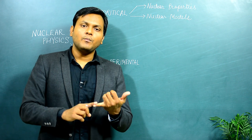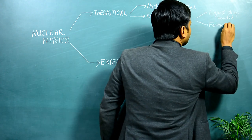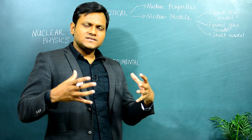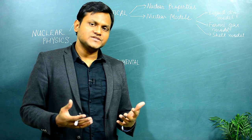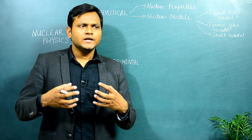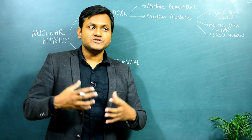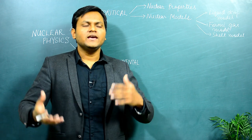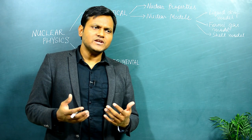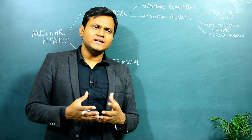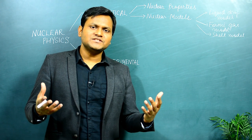For example, you have the liquid drop model, the Fermi gas model, and the shell model. The liquid drop model compares the nucleus to a drop of liquid and tries to explain the binding energy of a nucleus. The Fermi gas model compares particles inside the nucleus to particles in a Fermi gas, trying to explain the depth of the nuclear potential, why beta decay happens, and why there are almost equal numbers of protons and neutrons inside a nucleus. The shell model explains how particles inside the nucleus exist within a central potential field.